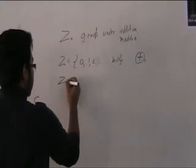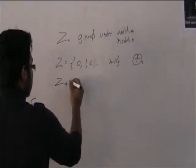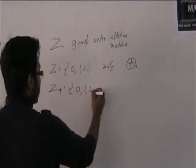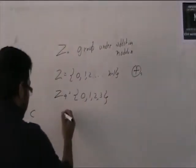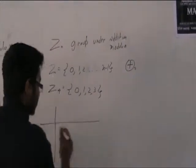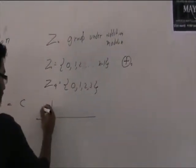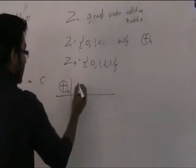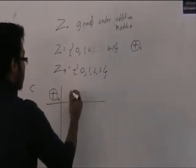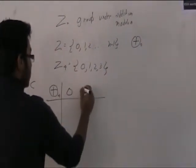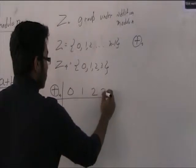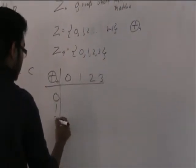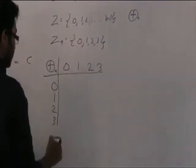Say I take Z4. Then Z4 is {0, 1, 2, 3}. I have addition modulo 4 as my operation, and I write down the elements of my Z4 — 0, 1, 2, 3 — along both the rows and columns.